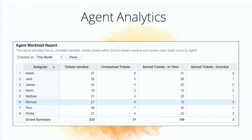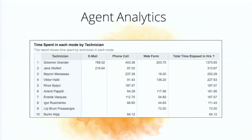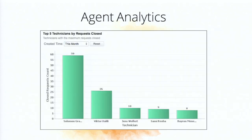After the SLA reports comes agent or technician analytics. Here you can see the workload for different agents — how many tickets they've handled, the number of unresolved tickets, solved tickets within the SLA limit, whether they solved on time, and overdue requests not yet closed. We also have time spent by technicians in different support channels — by email, phone call, or web forms. Like the salesperson reports, here we also have the top five technicians by number of requests closed.